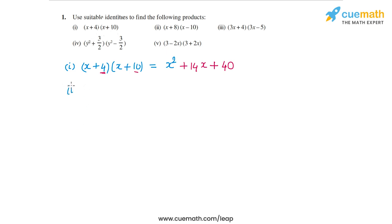Again, in the second one, it's based on the same identity. So we have (x+8)(x-10). So in this case, the values of a and b are 8 and -10. So I will have x², a plus b will be -2 in this case. So -2x, ab will be -80.